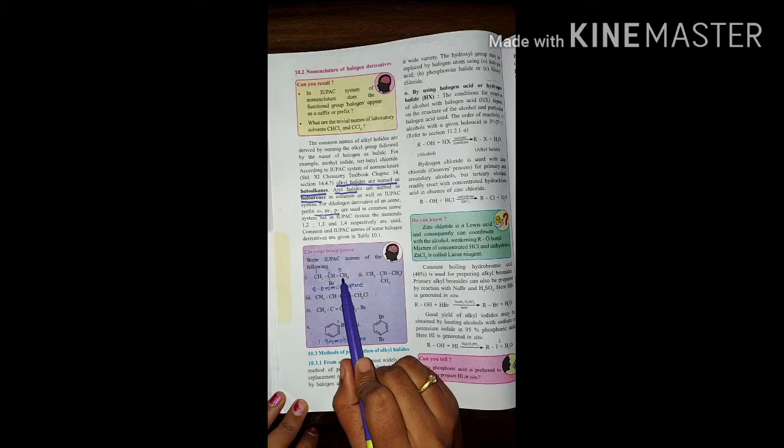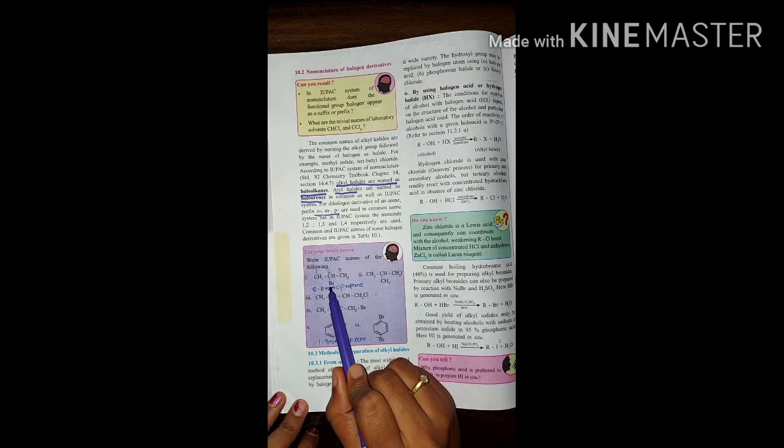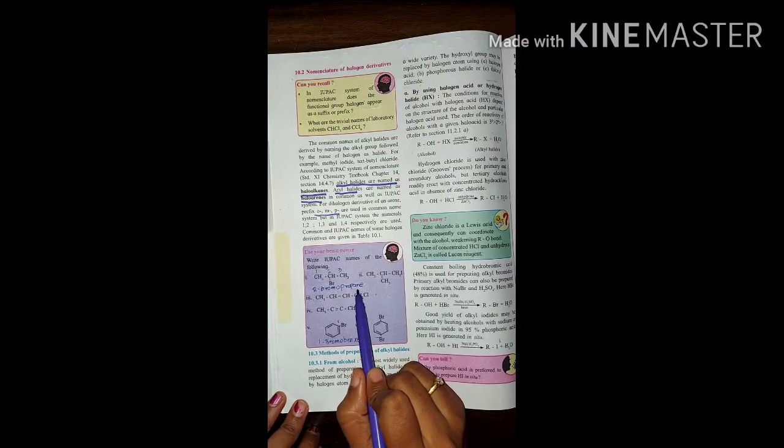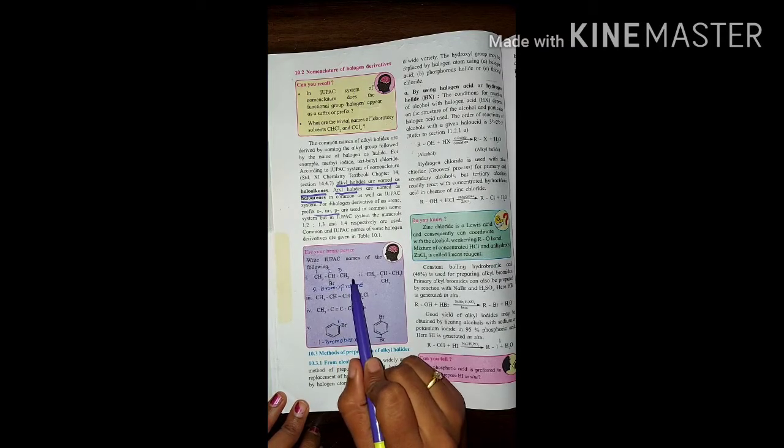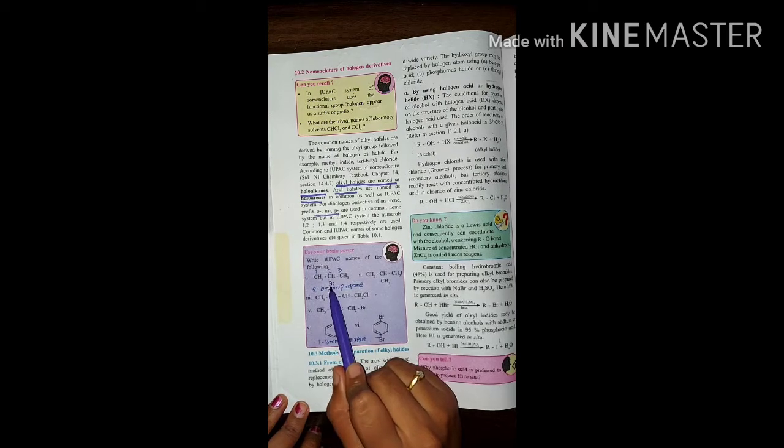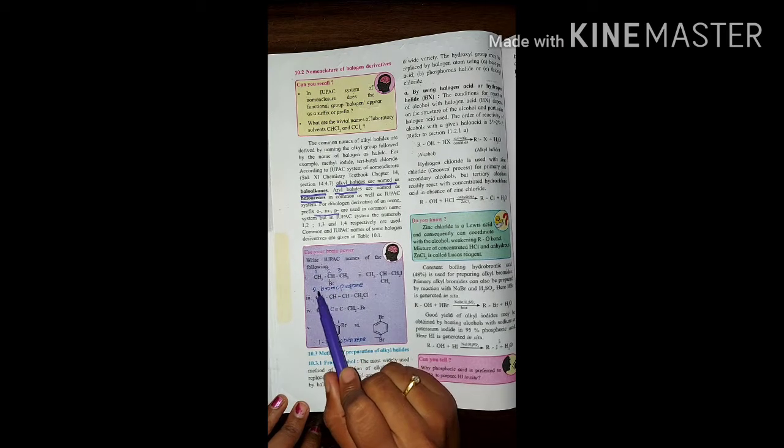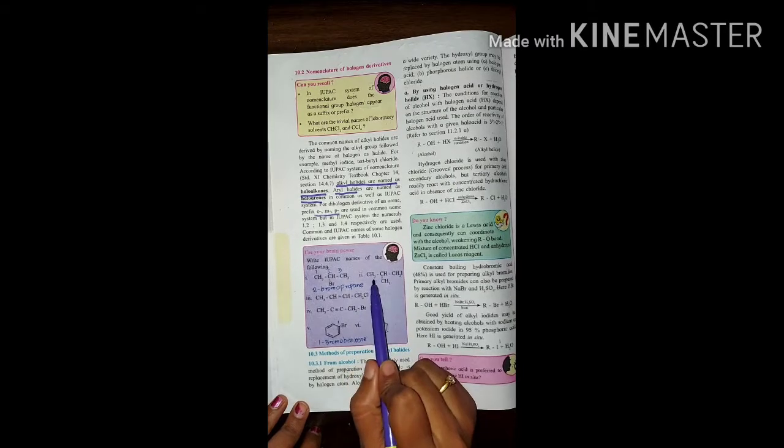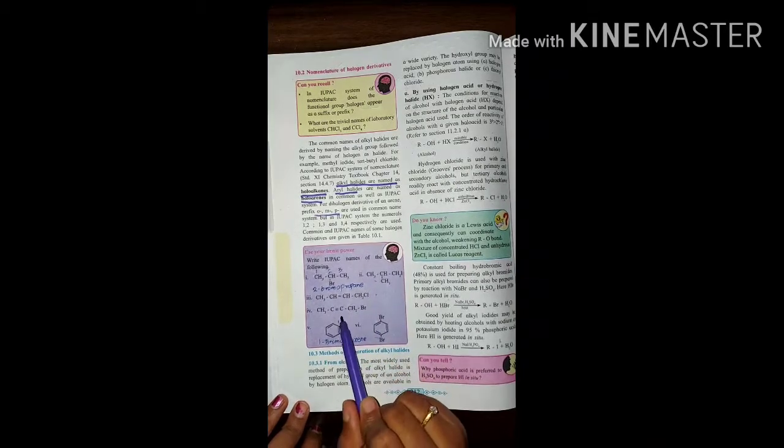CH3-CH-CH3 with bromine attached to the CH. As there are three carbons, it's propane. Four carbons would be butane. Second position has bromine, so it's 2-bromopropane. If you have any questions, text me or DM me.